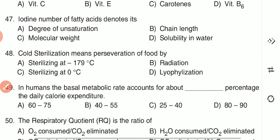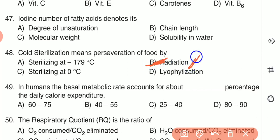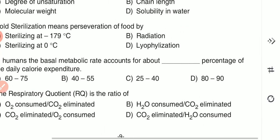Question 48: Cold sterilization means the preservation of food by — (A) sterilizing at -179°C, (B) radiation, (C) sterilizing at 0°C, or (D) lyophilization. Cold sterilization means preservation of food by radiation — also known as irradiation of food. Option B is the correct answer.